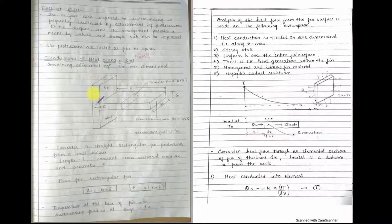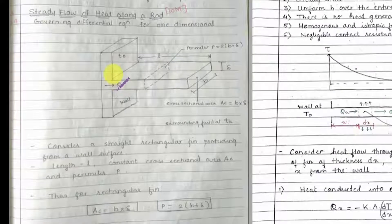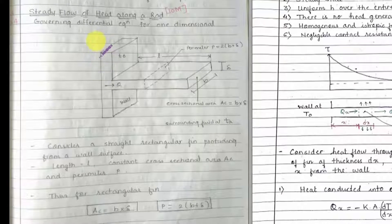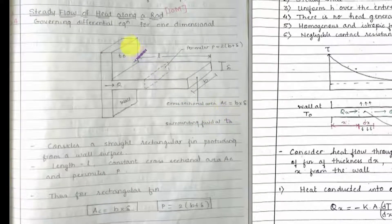Consider this a wall. On this wall, we have attached a rectangular fin. This is the fin which is attached on the wall. Now, assume that the wall is at a higher temperature — the wall is hot. Let the temperature of the wall be T0 and let the surrounding temperature be TA. The wall is at a higher temperature as compared to the surrounding temperature.